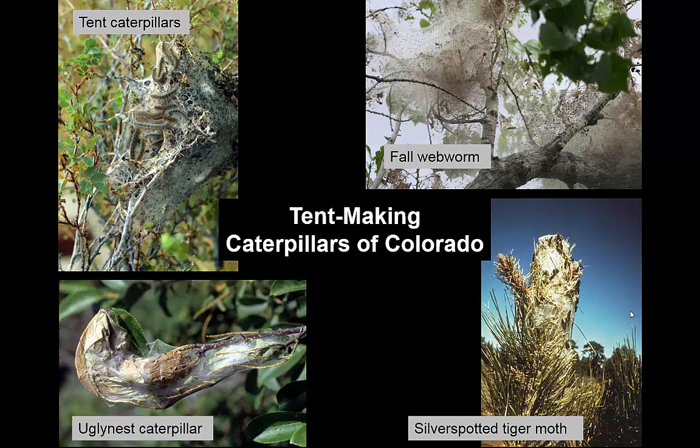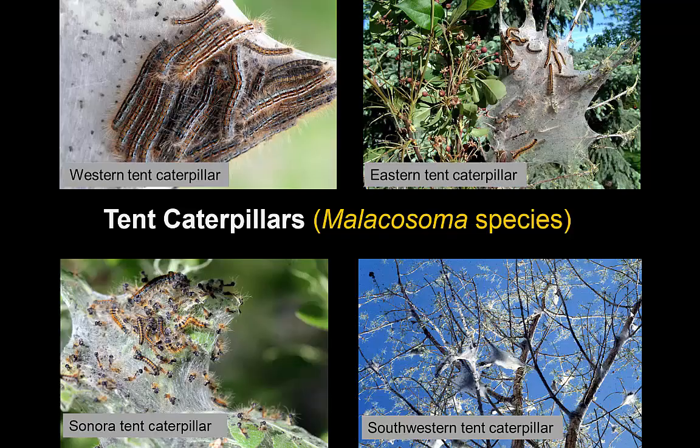To start with, in this first module, I want to talk about the caterpillars - specifically the caterpillars that produce conspicuous webs. Now all caterpillars can produce some silk, if for no other reason than to surround a pupa in a cocoon if it's a moth. But some make structures in the course of feeding, either large tents at one extreme, or maybe just tying a couple leaves together with some silk at the other.